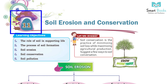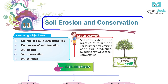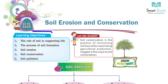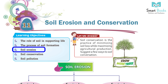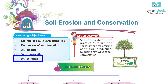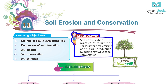Chapter 11: Soil Erosion and Conservation. Learning Objectives: 1. The Role of Soil in Supporting Life, 2. The Process of Soil Formation, 3. Soil Erosion, 4. Soil Conservation, 5. Soil Pollution. Soil conservation is the practice of minimizing soil loss while maximizing agricultural production.